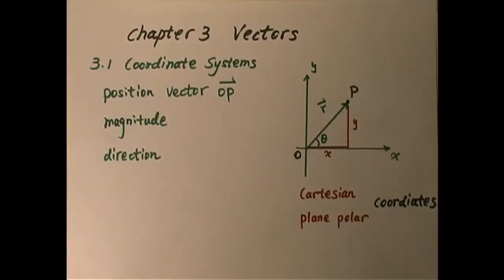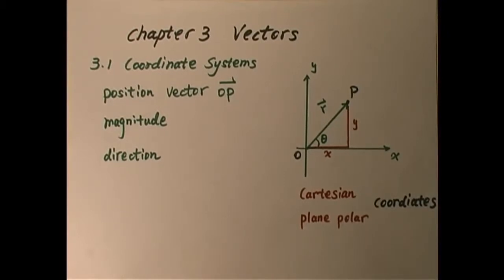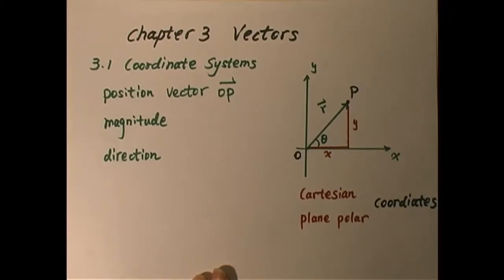Chapter 3: Vectors. The first section is about coordinate systems. We used to know Cartesian coordinate, which actually has another name — it's called rectangle coordinates. It consists of x and y for a two-dimensional case, and for a three-dimensional case, we have x, y, and z.